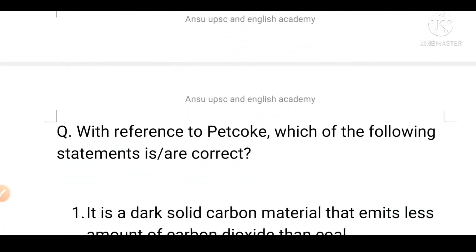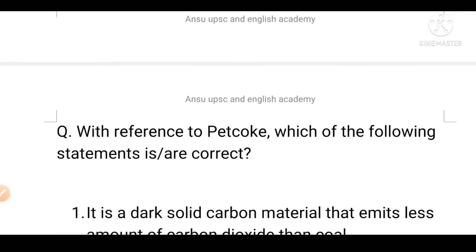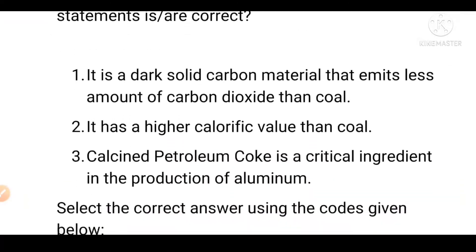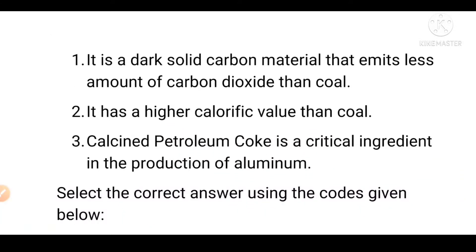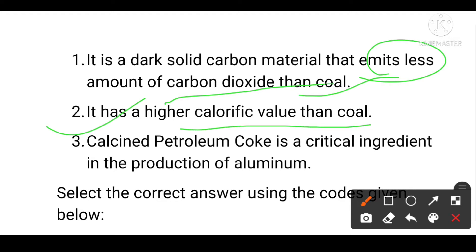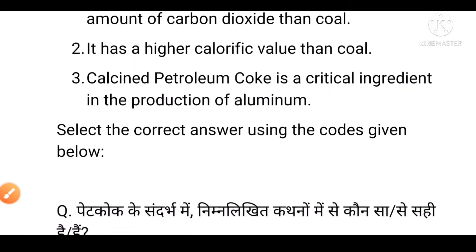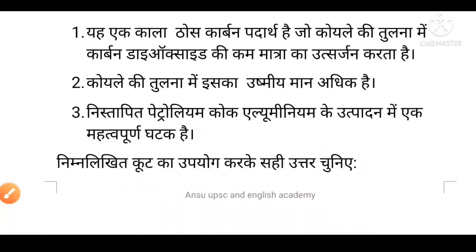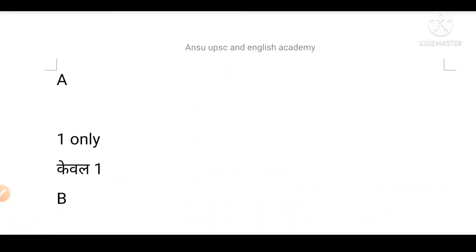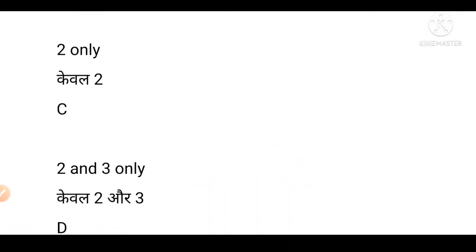Next question: With reference to petroleum coke, which of the following statements is or are correct? First, it is a dark solid carbon material that emits less carbon dioxide than coal. Second, it has a higher calorific value than coal. Third, calcined petroleum coke is a critical ingredient in the production of aluminium. Option A is first only, B is second only, C is second and third, D is first, second and third.